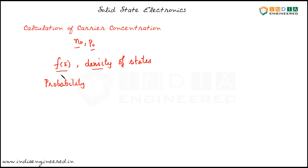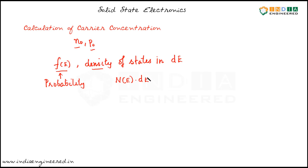We use F(E) to denote probability. The density of states in the energy range dE is denoted by N(E)·dE — that means the density of states in the energy range dE.